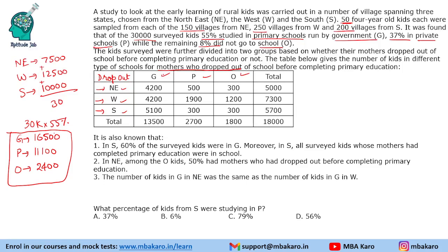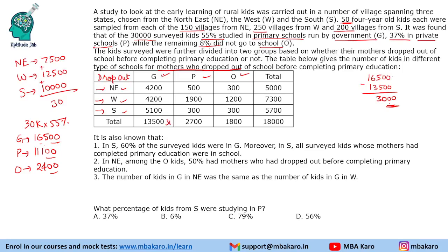I am filling it in this table itself. For G, there are a total of 16,500 students. In the given table we have 13,500, so the remaining students are 3,000 — let me write 30 (in hundreds). Similarly, for P it was 11,100; this is given as 2,700, so for students whose mothers completed education it is 8,400.